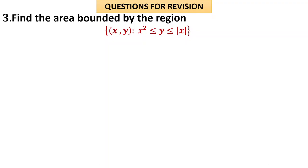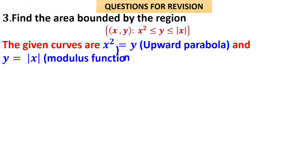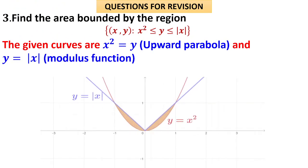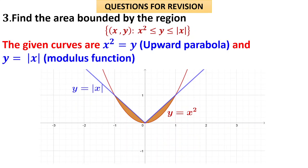Now let us move on to questions where two curves are involved — a parabola and a straight line. Find the area bounded by the region x² ≤ y ≤ |x|. First, identify the curves: the first curve is x² = y, an upward parabola, and y = |x|, the modulus function. The diagram shows the upward parabola and the modulus function centered at the origin.